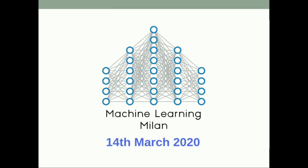Hi everyone, welcome to Machine Learning Milan. Thanks for joining us today. In this meetup we're going to talk about image-to-image translation using CycleGAN. I hope everyone is aware of GANs and how GANs are trained. We'll be using a dataset called selfie-to-anime in PyTorch. First I'll explain what image-to-image translation is, then cover ways to solve this problem, then jump into what CycleGAN is, and then we'll code it in PyTorch.